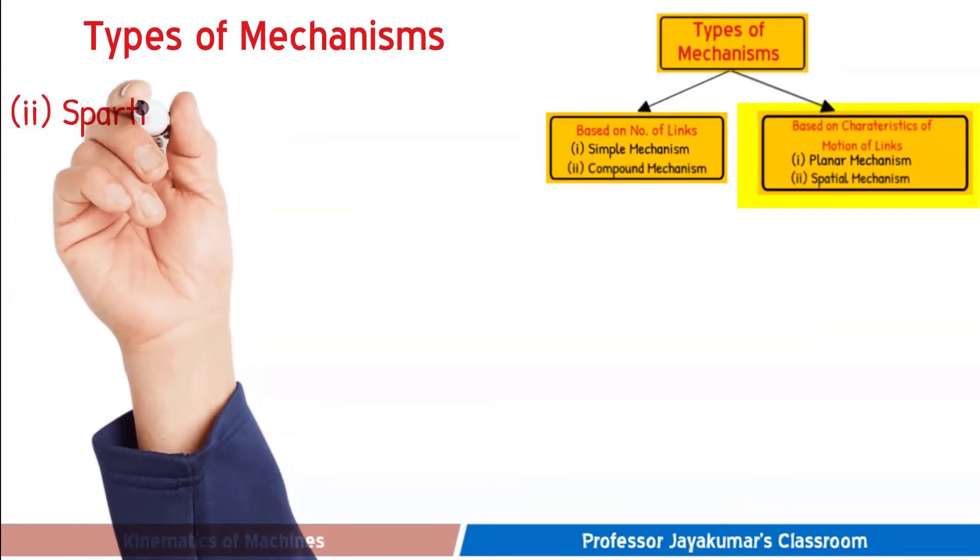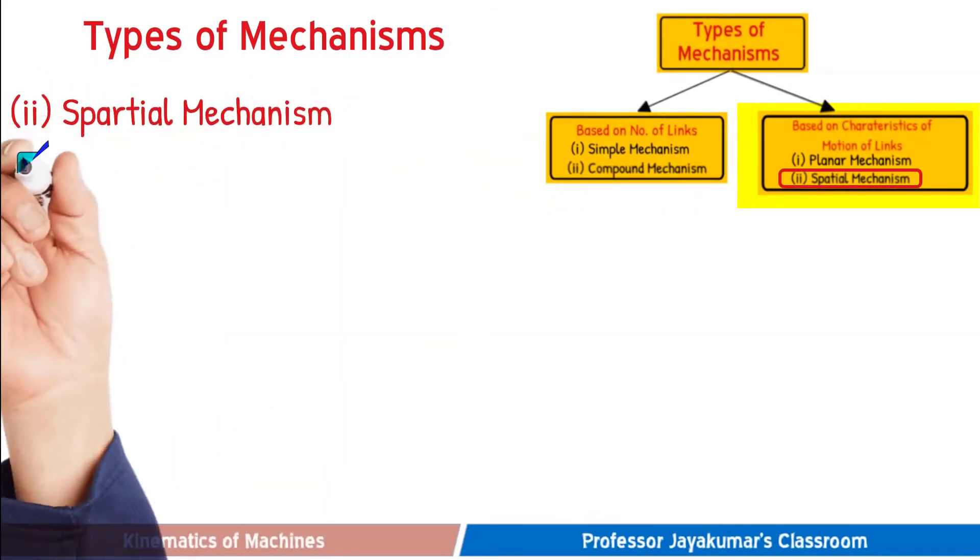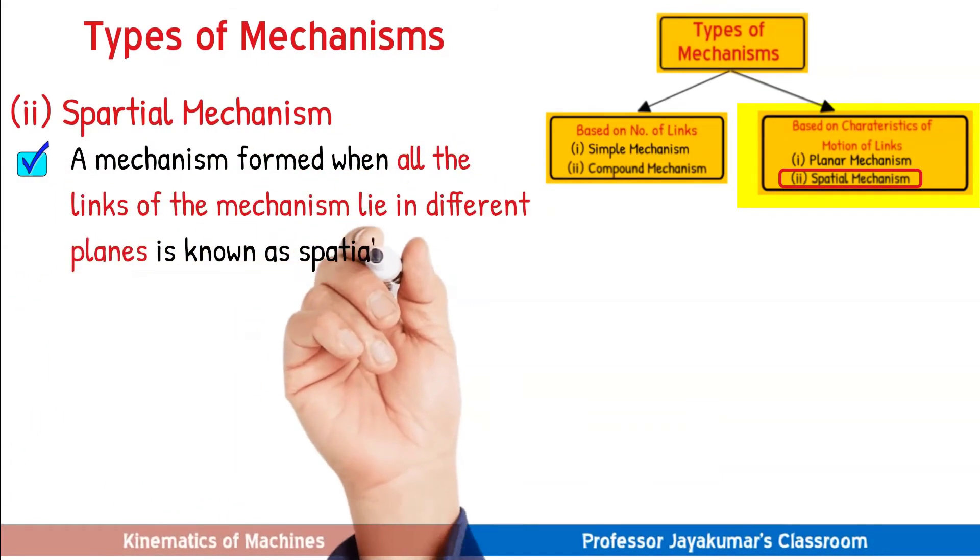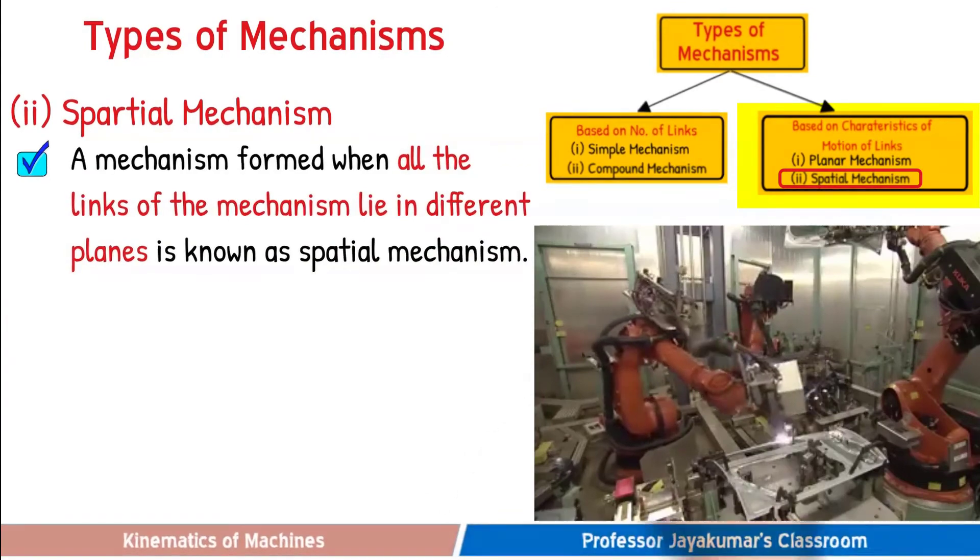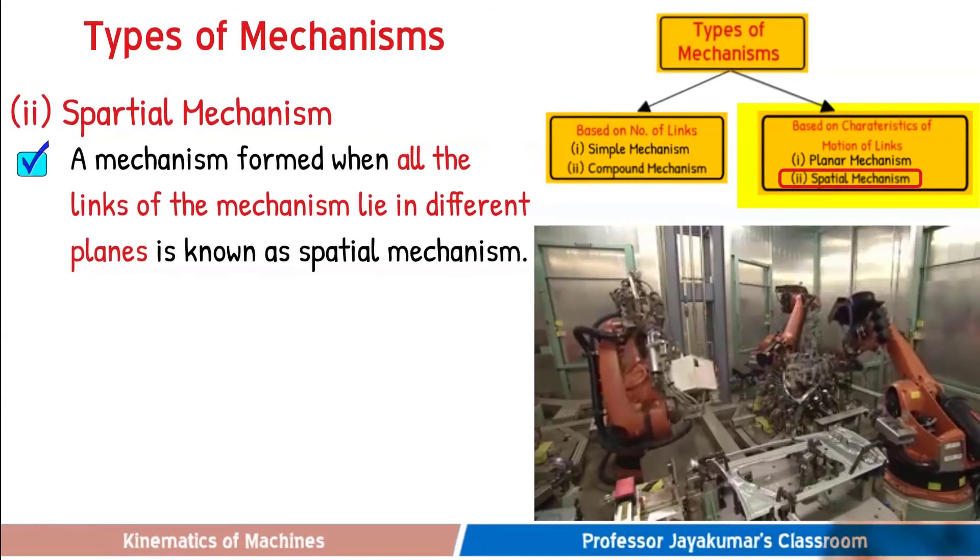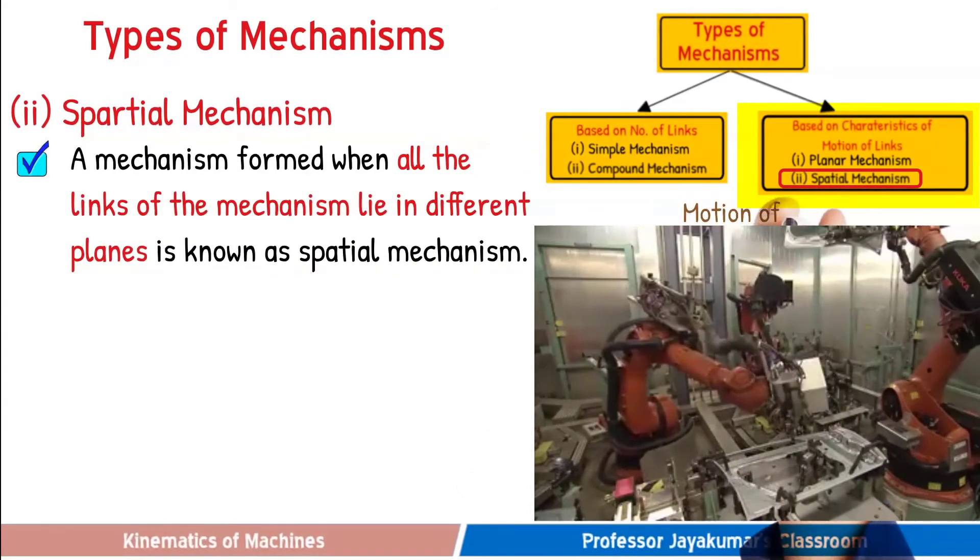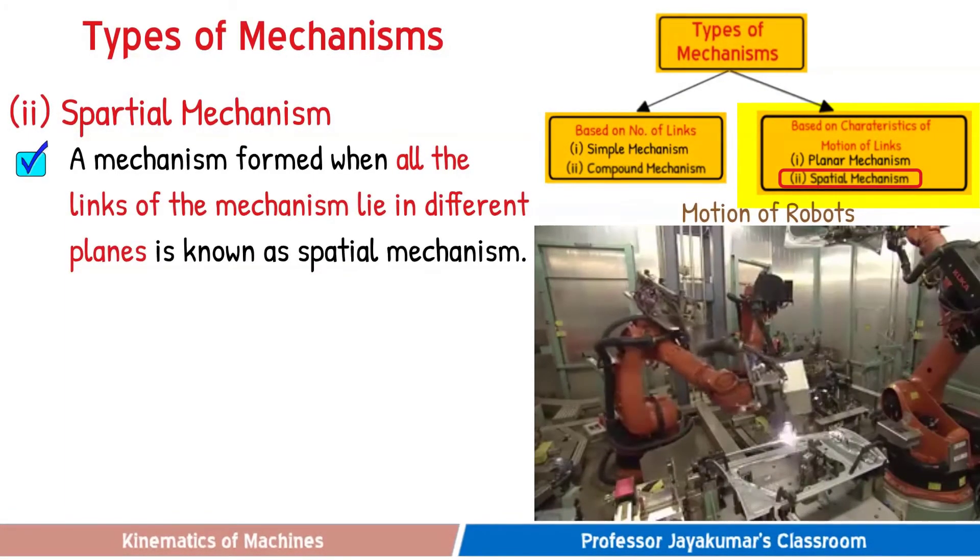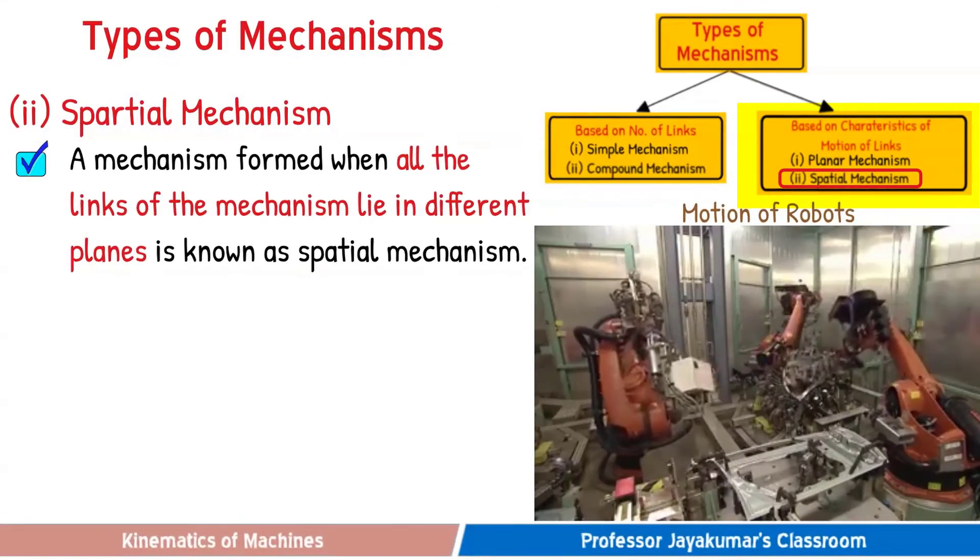Now, let us discuss about spatial mechanism. A mechanism formed when the links of the mechanism lie in different planes, it is known as spatial mechanisms. In other words, to describe the motion of spatial mechanisms, we need more than one plane. For example, the motions of a robot arm, crane and Hooke's joint are examples of spatial mechanisms.